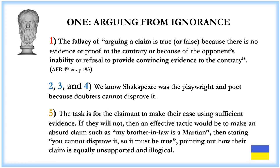Fallacy 1: Arguing from Ignorance. This is the fallacy of arguing a claim is true or false because there is no evidence or proof to the contrary, or because of the opponent's inability or refusal to provide convincing evidence to the contrary. Since the 19th century the argument has been: we know Shakespeare was a playwright and poet. The task is for the claimant to make their case using sufficient evidence. An effective tactic would be to make an absurd claim such as 'my brother-in-law is a Martian,' stating you cannot disprove it so it must be true, thus pointing out how their claim is equally unsupported and illogical.